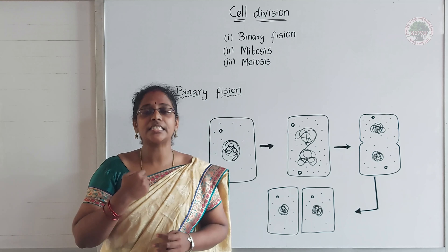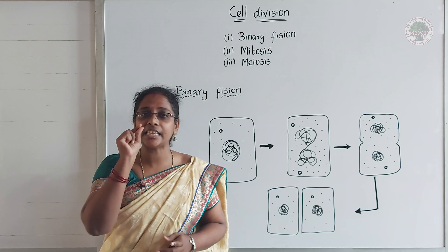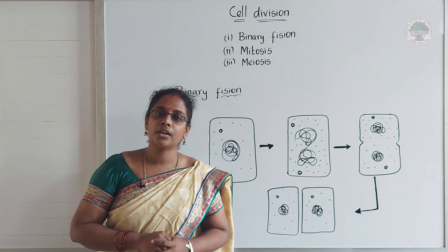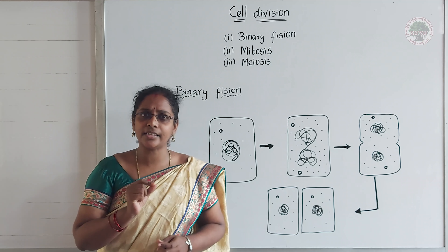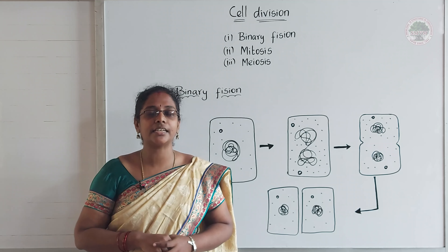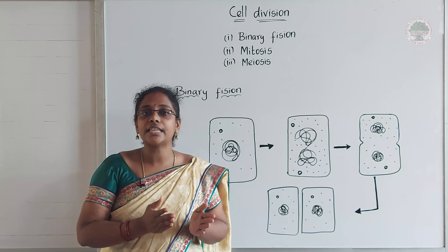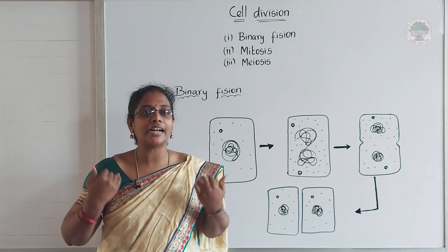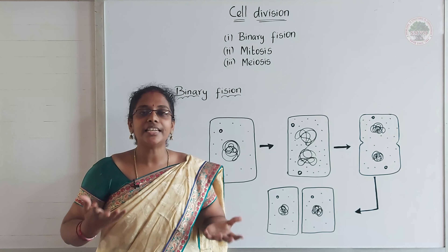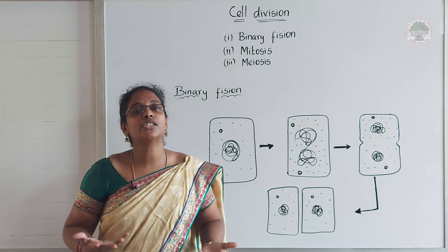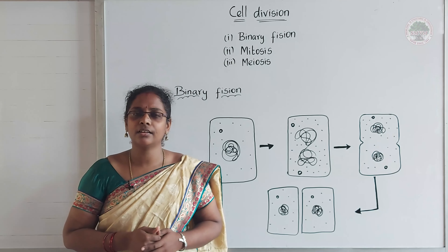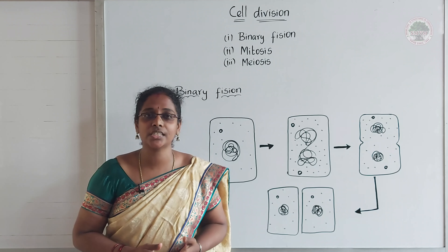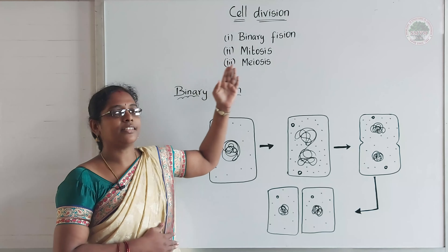We are starting our life as a single-celled organism. That fertilized egg is made up of a single cell. So from that single-celled organism, we are now adults with trillions and trillions of cells in us. That is because of a process called cell division.